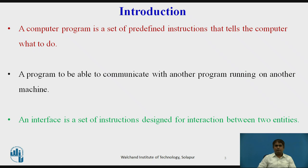How can a client process communicate with a server process? A computer program is a set of predefined instructions that tells the computer what to do. A computer program has a set of instructions for mathematical operations, another set of instructions for string operations, and still another set of instructions for input or output access.